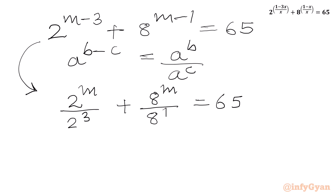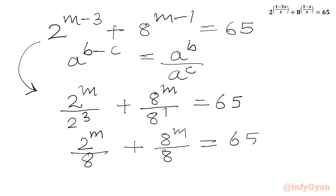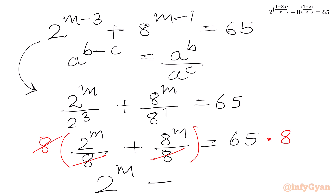Now 2 raised to 3 is 8, so we can write: 2 raised to m over 8, plus 8 raised to m over 8, equal to 65. Now we will multiply both sides by 8, so the denominator cancels and our equation becomes: 2 raised to m plus 8 raised to m equal to 65 times 8, which equals 520.